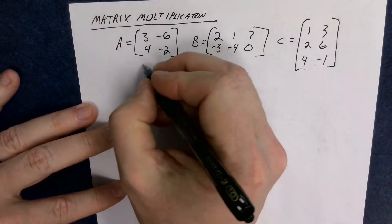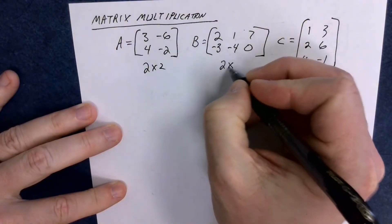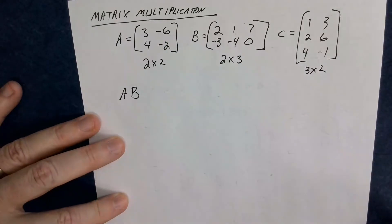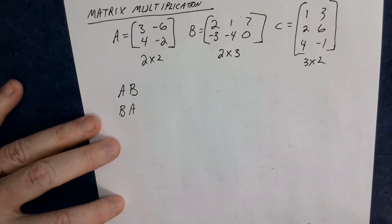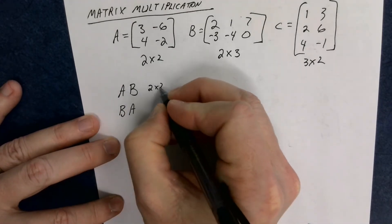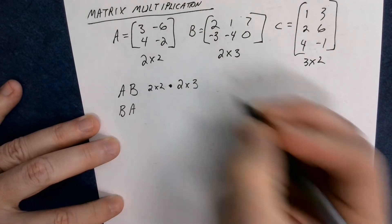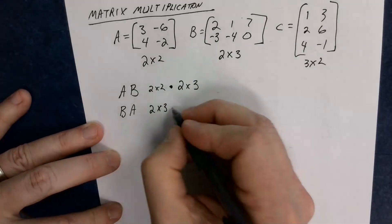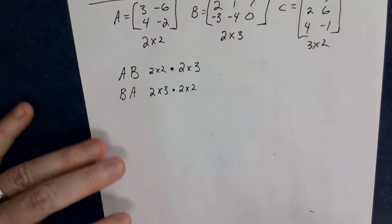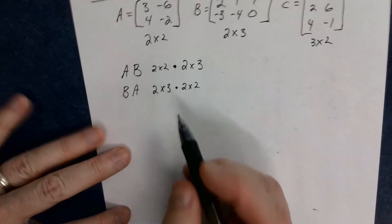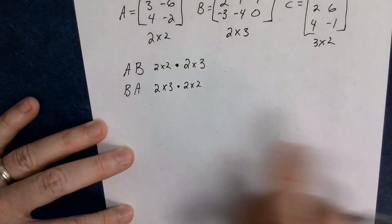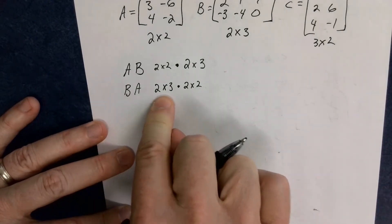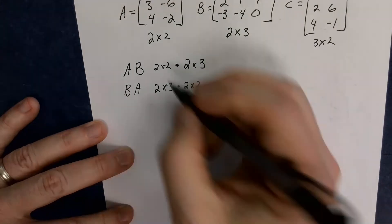So matrix multiplication, the first thing you have to do is you have to write down the dimensions of each one of the matrices. And when you multiply a matrix, there is a difference between AB and BA. When you do AB, you're doing a two by two times a two by three. When you're doing BA, you have a two by three, which is B's dimension, times a two by two. And that's really important. And the reason is, in order for you to even be able to do these multiplications, you first off have to write the dimensions down next to each other like that.